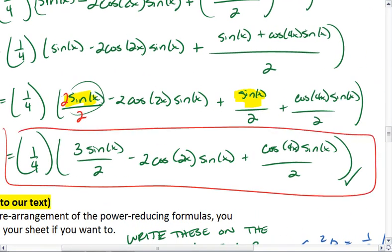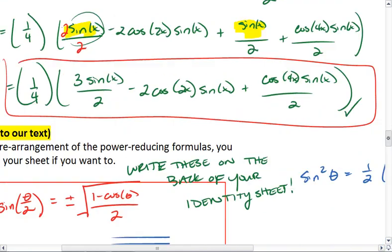And we ended up with this equation here: 1/4 times 3 sine x over 2 minus 2 cosine 2x sine x plus cosine 4x sine x all over 2. If we want to, we can start from there.